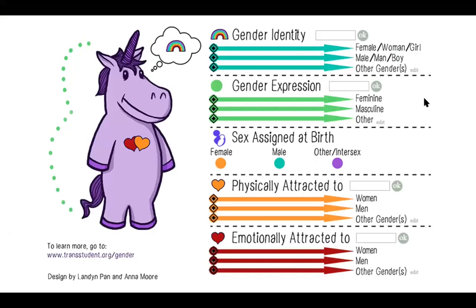Any teaching about gender and sex requires foundational knowledge. We're going to provide you with two graphical models that can lay that foundation for your students, as well as define some of the words we'll be using during this presentation. This is the gender unicorn, created by the Trans Student Education Resources. It can be a great way to parse apart some of the main aspects of identity — gender identity and expression, sex assigned at birth, and physical and emotional attraction.